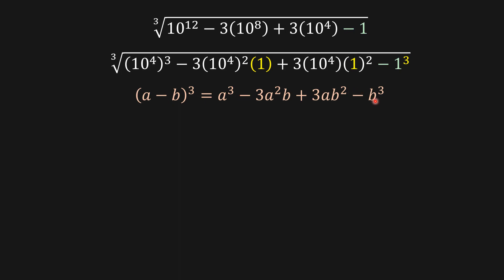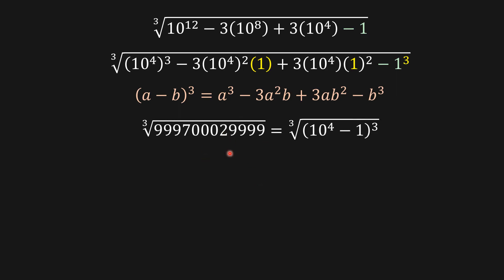If you compare this with the (a - b)³ expansion: a³ is ten to the four cubed, minus three times ten to the four squared times one, plus three times ten to the four times one squared, minus one cubed — that is b cubed. This confirms the perfect cube identity.